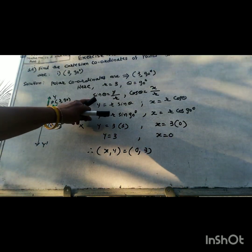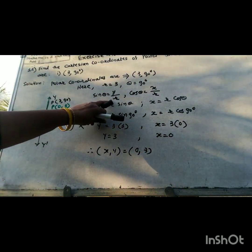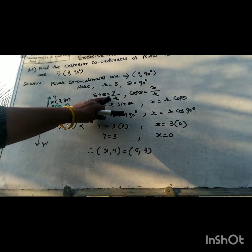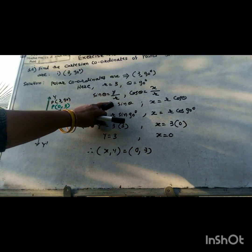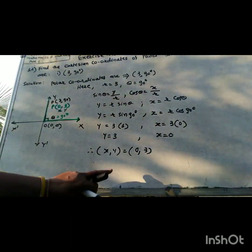To summarize: sin theta equals y divided by r, and cos theta equals x divided by r. Therefore y equals r times sin theta and x equals r times cos theta.